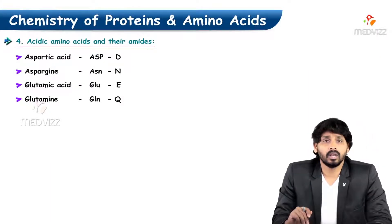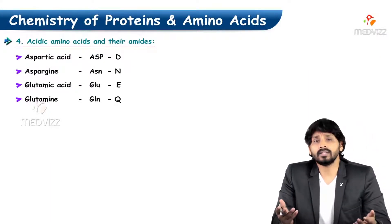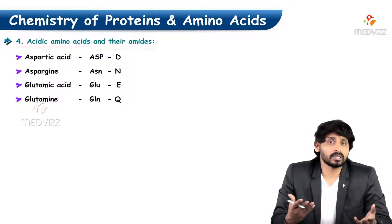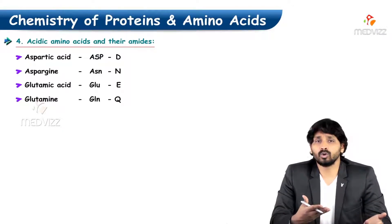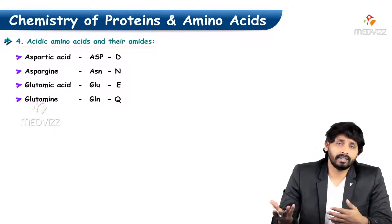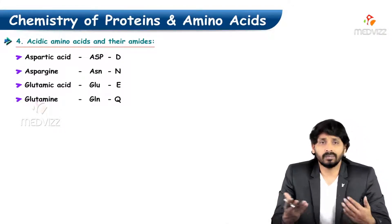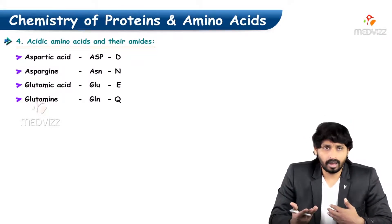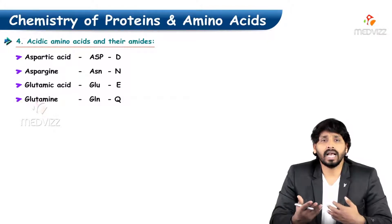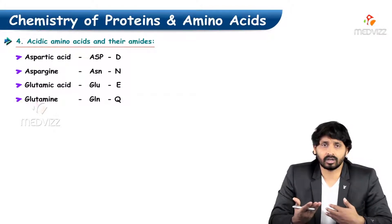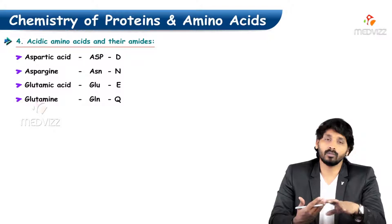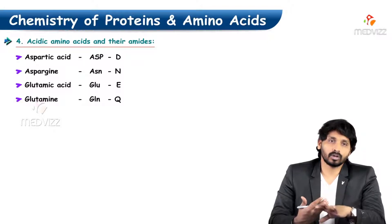Acidic amino acids - we are all aware that amino acids carry both acidic as well as basic groups. The amino group indicates the base and carboxyl group indicates the acid. Similarly, if amino acids are carrying an extra acidic group, meaning an extra COOH in the structure next to the regular carboxylic group, they are categorized under acidic amino acids.